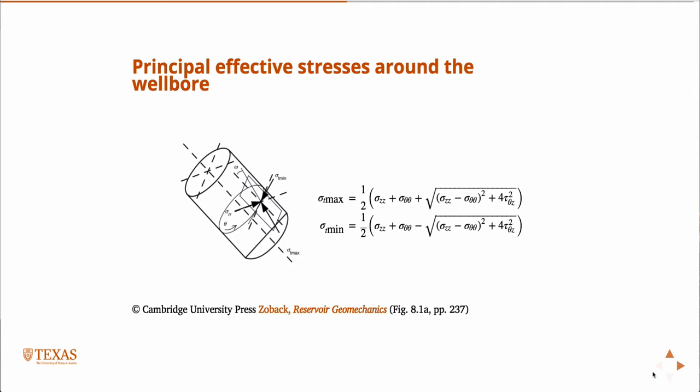In an arbitrarily deviated well, that's not going to be the case. Sigma rr will always be a principal stress, but then the other two principal stresses are the maximum and minimum tangential stresses on the wellbore wall. And you can evaluate those via these equations.